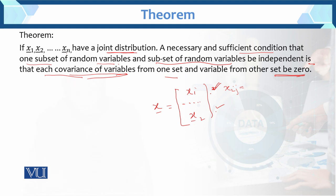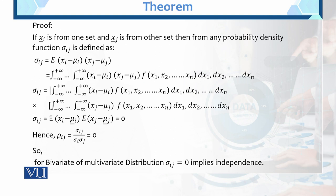What we need to do further: if xi is from one set and xj is from the other set, from any probability density function, sigma_ij is defined as the covariance, which is equal to the expected value of (xi minus mu) into (xj minus mu). This is the covariance.